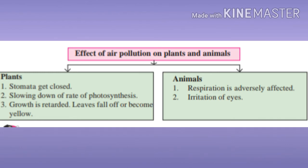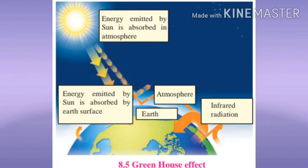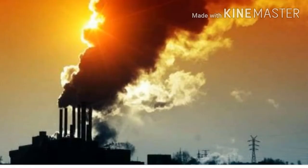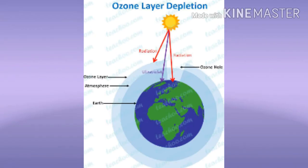Now we will study about the ozone layer. The ozone layer is protecting us from ultraviolet rays of the sun. The reasons for depletion in the ozone layer include the formation of greenhouse gases, industrialization, and CFC that is chlorofluorocarbon. Due to these things the ozone layer is depleting.